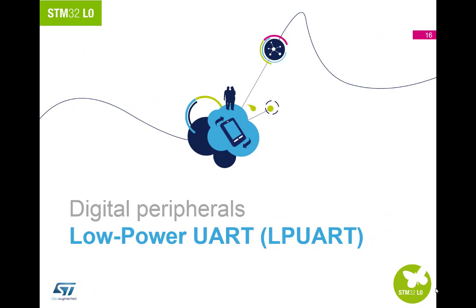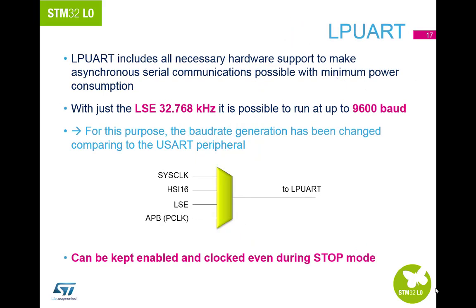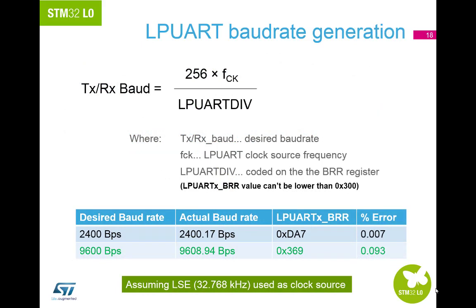Finally, let us look at the low power UART — a UART which allows bi-directional communications with limited power consumption. Using the 32.768 kHz low speed external clock source allows the UART to communicate at up to 9600 baud per second. Higher baud rates can be reached when clocked by a source different from LSE, and this new clock source means it can be clocked even during stop mode. The baud rate for both receiver and transmitter are set to the same value as programmed in the baud rate register, and the baud register value should not be changed during a communication.